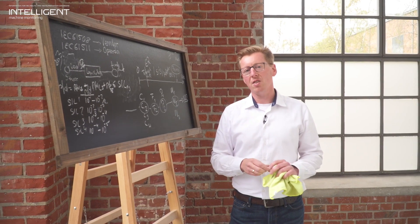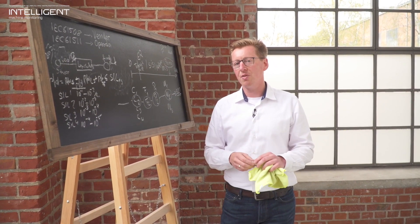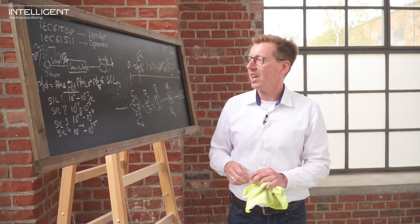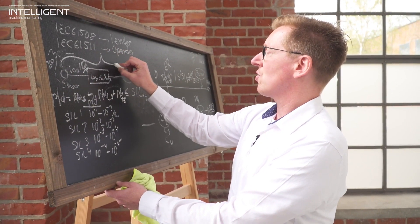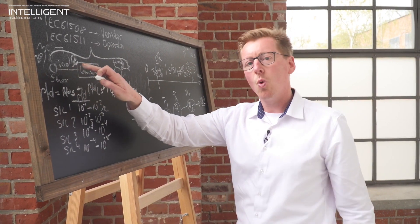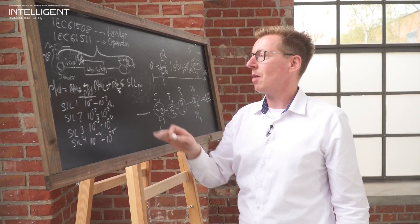Another way to reduce the PFD that you have within your system is to increase the number of proof testing intervals. So you increase the frequency of testing your system. In this case, you have to test the entire safety instrumented system to make sure that it works as intended for this application.